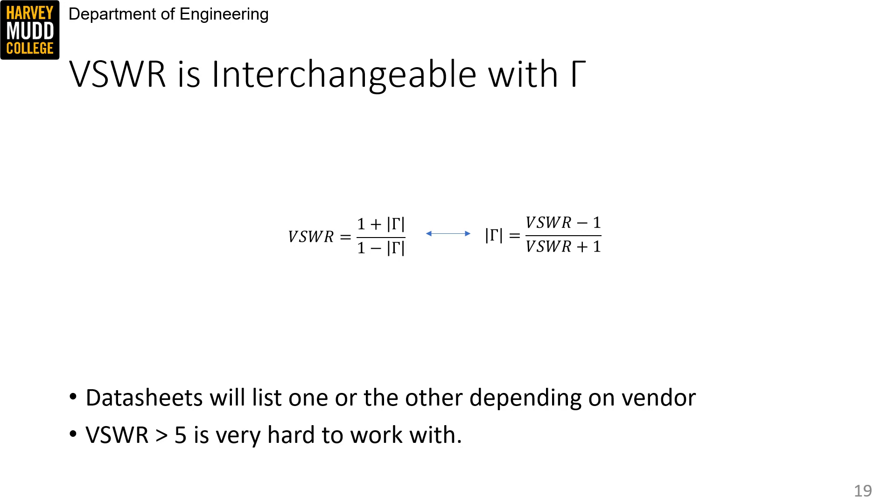A few final notes. First, VSWR can provide a handy rule of thumb for when an RF system is too reflective. Engineers I've spoken to consider VSWR greater than 5 essentially unusable.